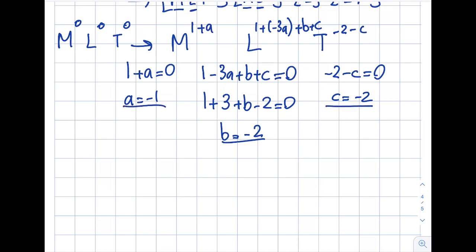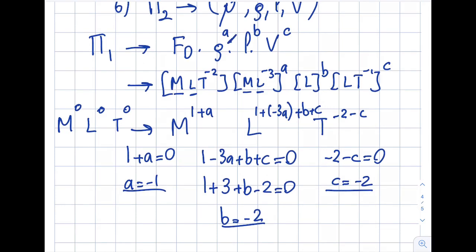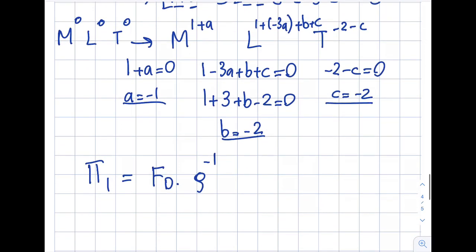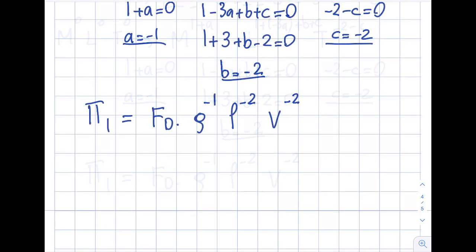So if I go up here, I will insert this over here: A, B, and C. So my pi term then becomes FD times density to the power of 1, right? So my pi term becomes FD, density to the power of minus 1, because A is minus 1, L to the power of minus 2, and velocity to the power of minus 2. So from here, my pi one will be FD divided by density length square times velocity square.